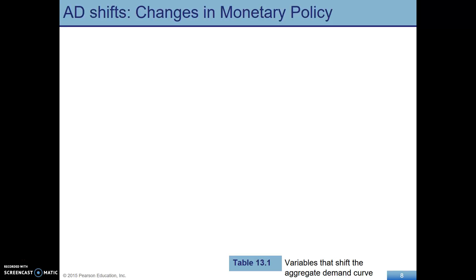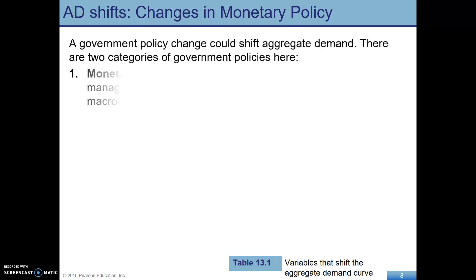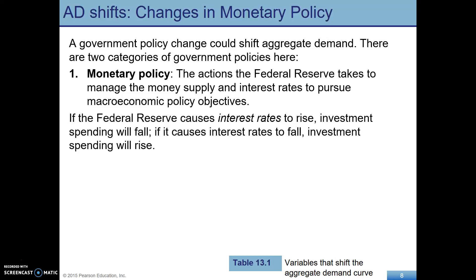You also need to know the shifters. When you think about C, I, G, and NX — we'll take a look at G in a second. Government policy is also going to be able to shift aggregate demand. There are two key types: monetary policy and fiscal policy. Monetary policy is controlled by the Federal Reserve — the Fed — and we often think about the Fed influencing interest rates.